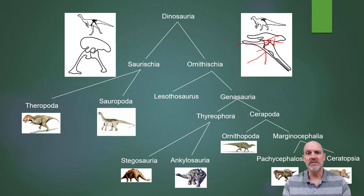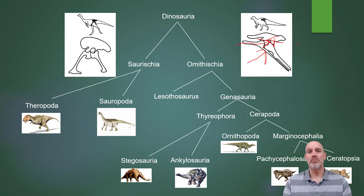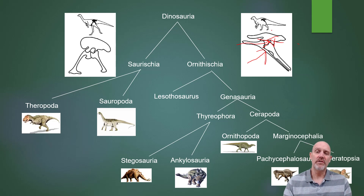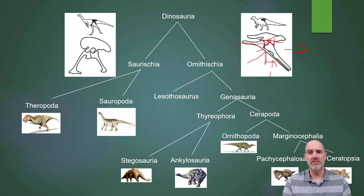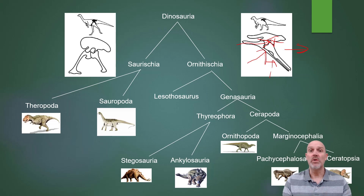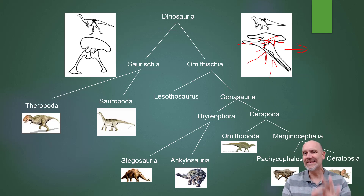Then we go to ornithischians. And for ornithischians, the synapomorphy was the predentary bone. It was the backward-facing pubis, which is right here, so it's facing backwards. We had a few other features as well - the palpable bone and some teeth - but the main ones I want you to know are the backward-facing pubis. It's very important, as well as the predentary bone. Those two things are what really mark this group as their own distinctive group.